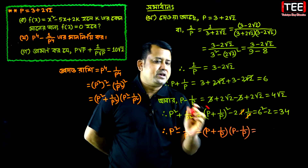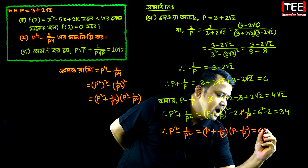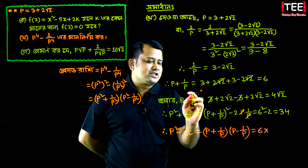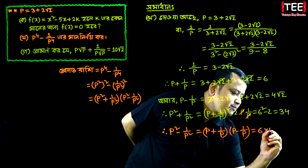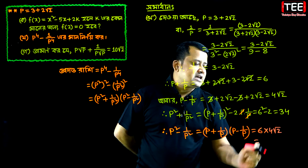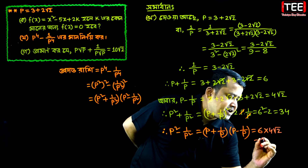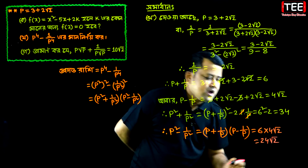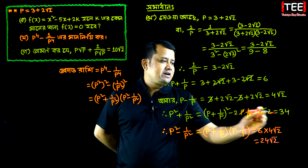We have p plus 1 by p equals 6. P minus 1 by p gives 4 root 2. So their product is 6 times 4 root 2, which equals 24 root 2.